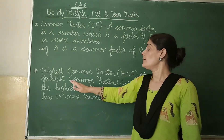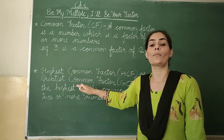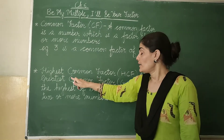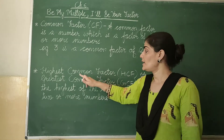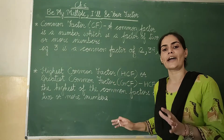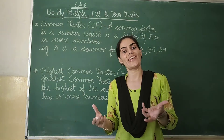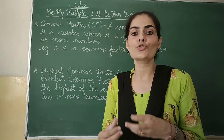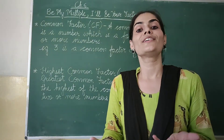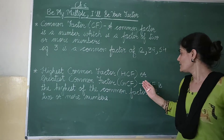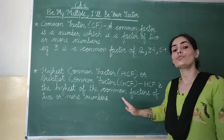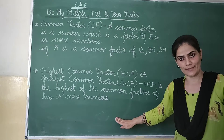The next important term you will learn after common factor is Highest Common Factor, represented by HCF. You can also say Greatest Common Factor or Greatest Common Divisor — written as GCF or GCD respectively, where D stands for divisor. The name itself tells you that out of all the common factors 2 or more numbers have, the highest or largest one will be the HCF.